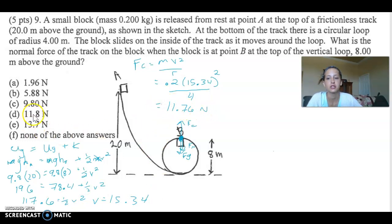It'd be really tempting to circle D and go, we did it. But they're not asking what's the centripetal force, they ask what's the normal force. So let's keep going. We need to find the gravitational force and then subtract it. We're almost done.